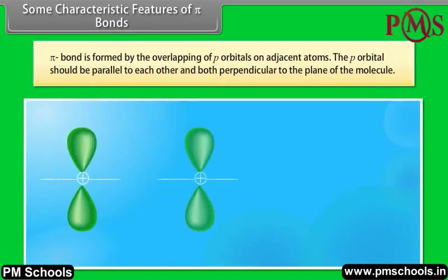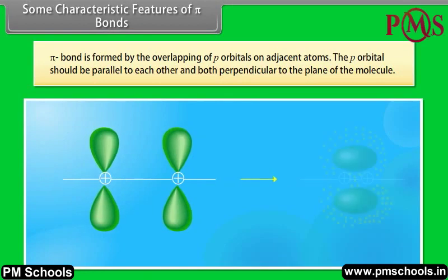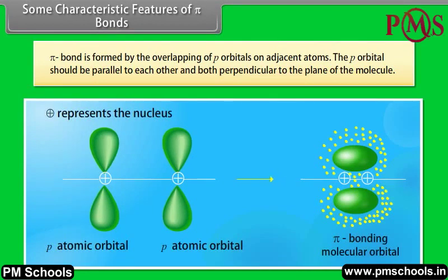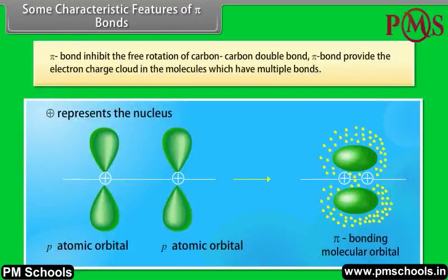Some characteristic features of pi bonds. Pi bond is formed by the overlapping of p orbitals on adjacent atoms. The p orbitals should be parallel to each other and both perpendicular to the plane of the molecule. Pi bond inhibits the free rotation of carbon-carbon double bond. Pi bond provides the electron charge cloud in molecules which have multiple bonds.